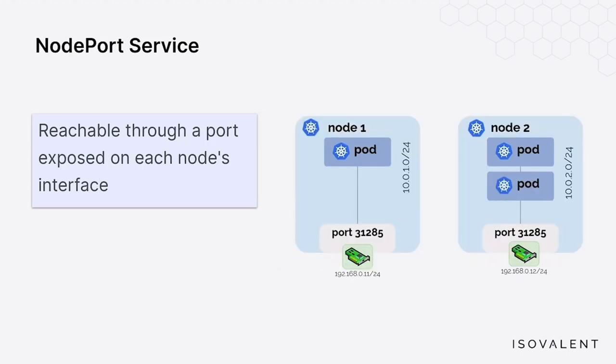The second type is NodePort. In this case, the internal cluster IP is still there, and on top of that, the service is also exposed as an open port on each of our nodes. This means that the service can now be reached from outside the cluster, typically by other machines in the same virtual network as the cluster nodes. Kube Proxy will handle the traffic and redirect it to one of the pods, no matter the node. So when we connect to an external IP of one node on a given port, our request may end up being served by a pod running on a different node.